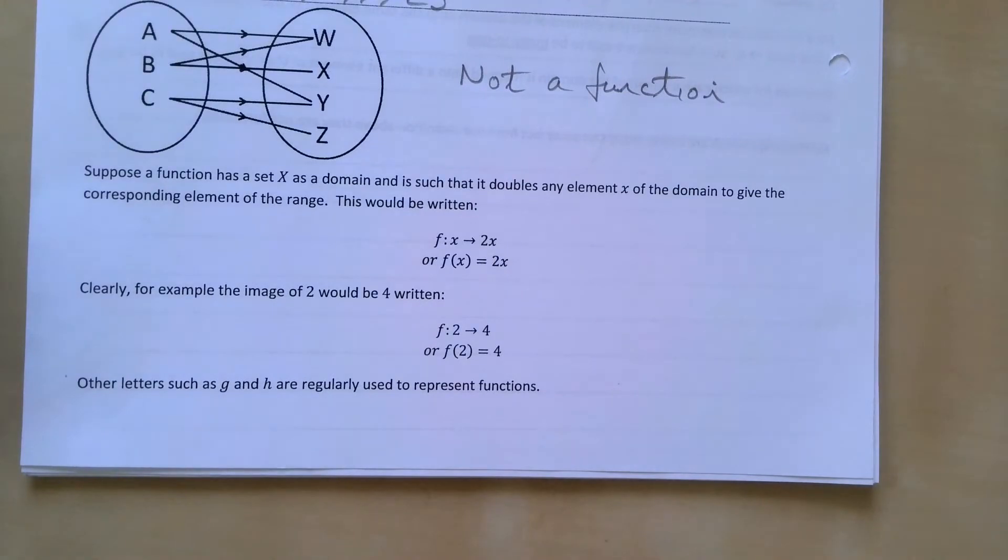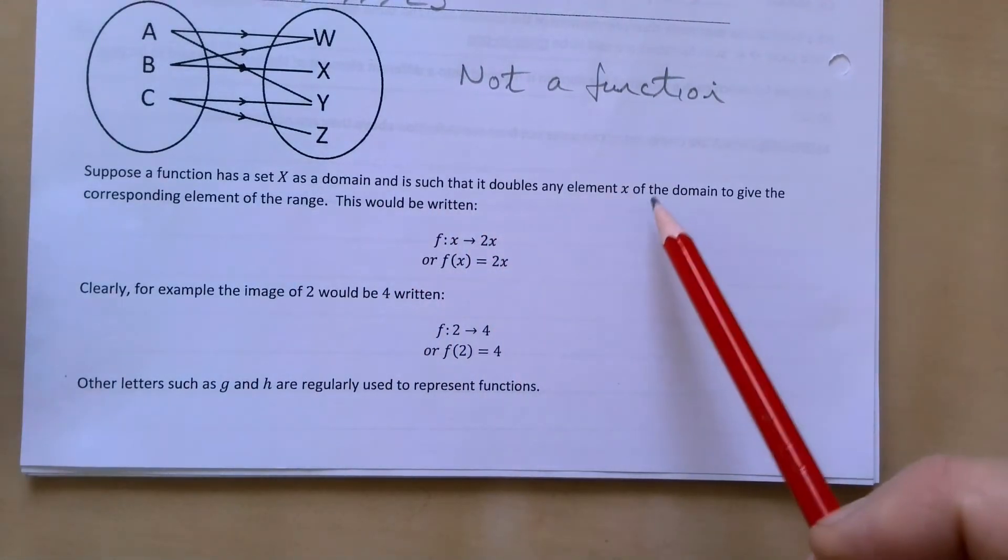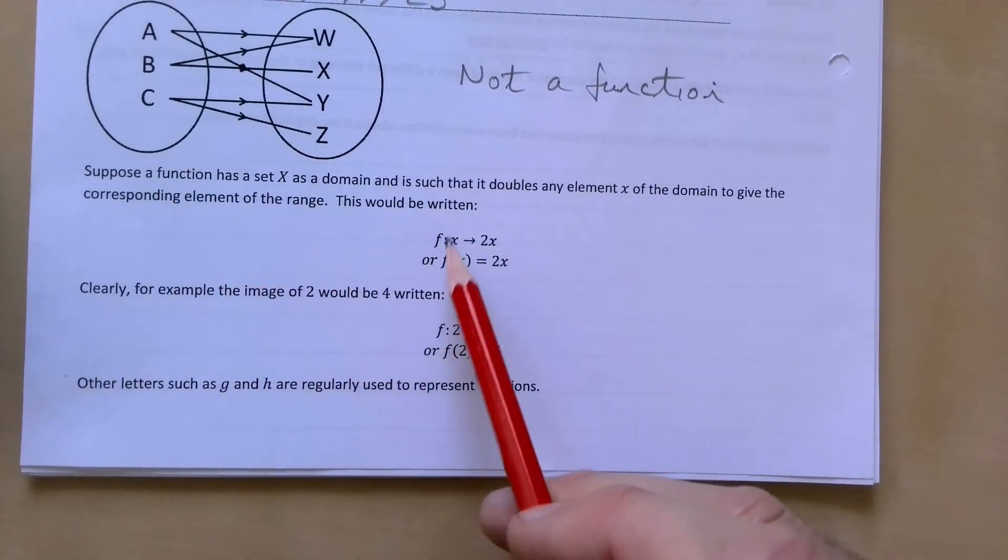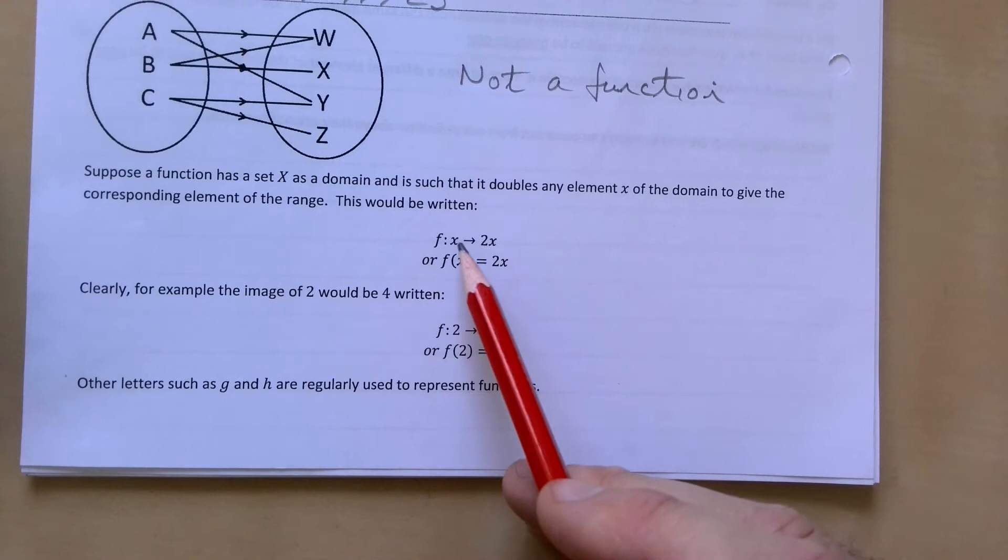So suppose a function has a set X as a domain and is such that it doubles any element of the domain to give the corresponding element of the range. This would be written as the function x goes to 2x, or f(x) = 2x.